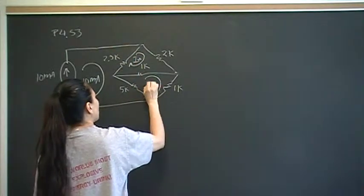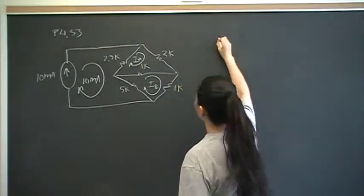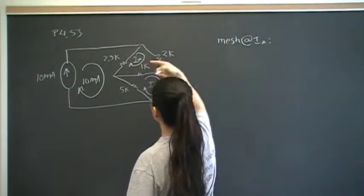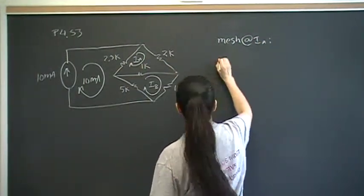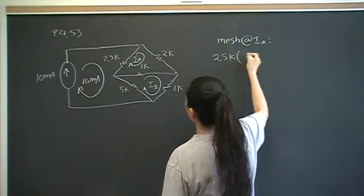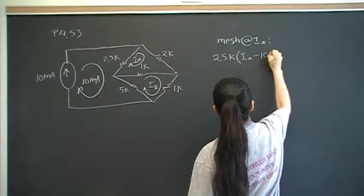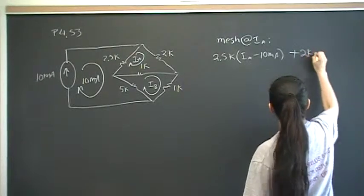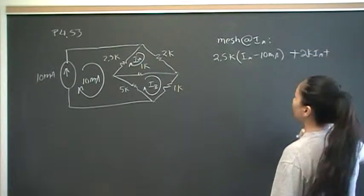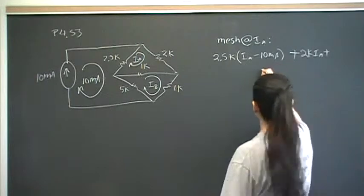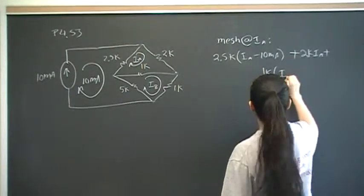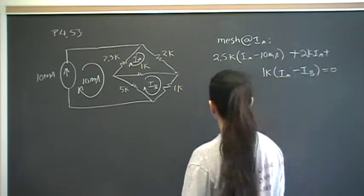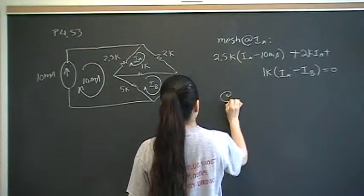This one is some unknown I sub B. So the mesh equation at Ia: we've got the voltage drop across the 2.5k resistor — that's 2.5k times (Ia minus 10 milliamps). Then the next voltage drop across the 2.5k resistor — that's 2.5k times Ia. And the final voltage drop is across the 1k resistor — that's 1k times (Ia minus Ib). That's equal to zero.